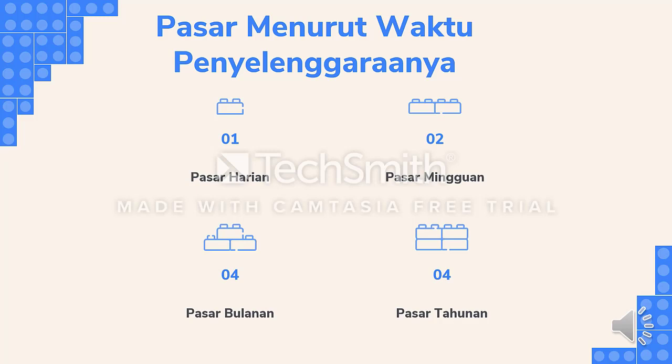Keempat adalah pasar tahunan, yaitu pasar yang diadakan setahun sekali. Pasar ini bersifat nasional maupun internasional. Penyelenggaraannya sebagai ajang promosi untuk produk-produk tertentu ataupun produk-produk baru. Contohnya antara lain PRJ (Pekan Raya Jakarta) dan pasar malam Sekatenan di Yogyakarta.